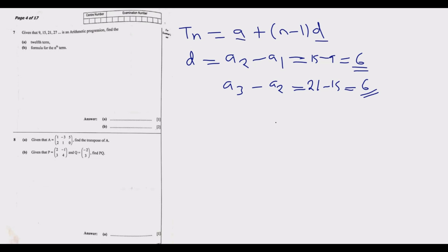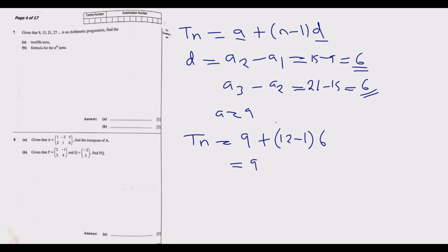The first term is 9. To find the 12th term, substitute n equals 12: T₁₂ equals 9 plus 12 minus 1 times 6, which is 9 plus 11 times 6, giving 9 plus 66, which equals 75. So the 12th term is 75.